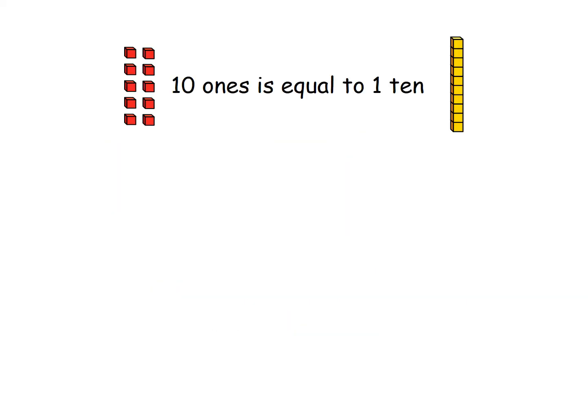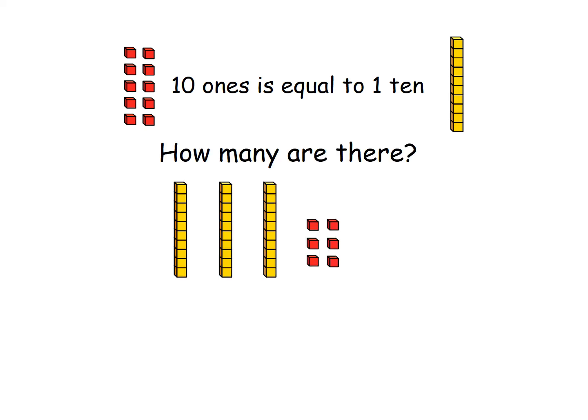Right, 10 ones is equal to one lot of 10. So let's see how many there are. So remember we're counting tens and then you count the ones. So we've got one, two, three tens. And how many ones have we got? Well done if you said six.